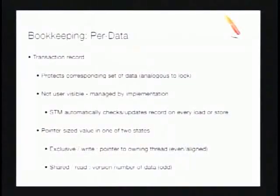In the hardware setting we relied on the cache to help with bookkeeping. In software TM, we need data structures. One set is per-data data structures. There's something we call a transaction record, which is somewhat analogous to a lock — it protects some corresponding set of data. The difference is it's not user visible; it's managed by the implementation. The programmer never sees the transaction record. It's up to the STM to automatically check and update this record on any load or store.